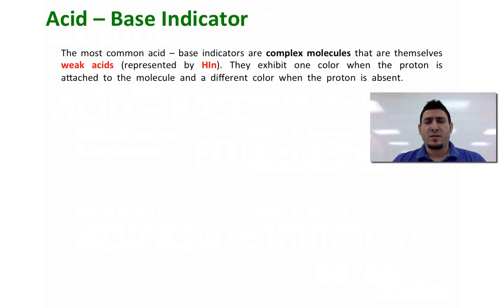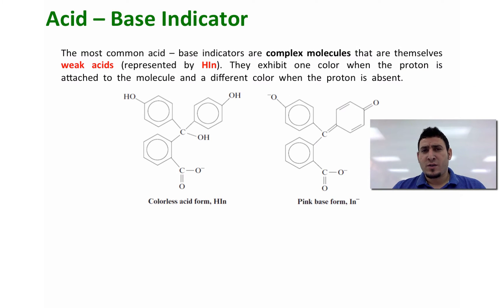We can take a look at the structure of the phenolphthalein molecule, and you can see that it's colorless when the hydrogen is attached to it—so in the form of HIn—and pink when the hydrogen is removed. That's the In⁻ form.